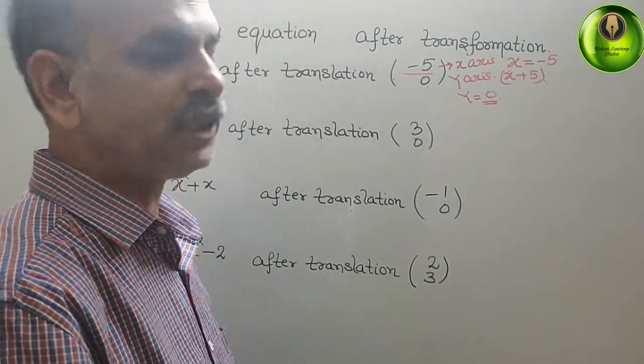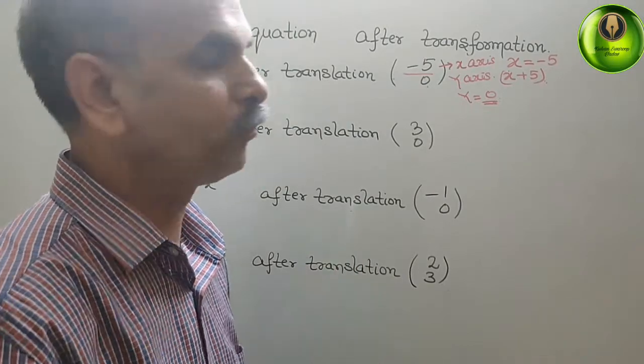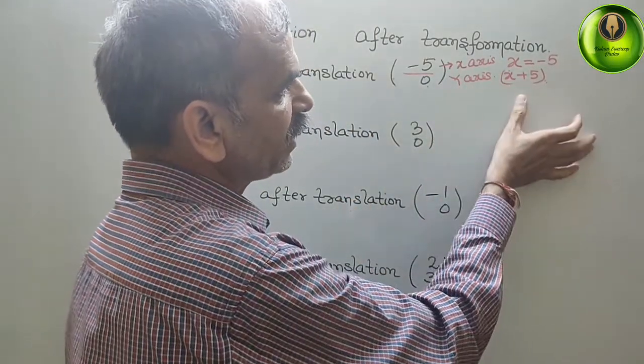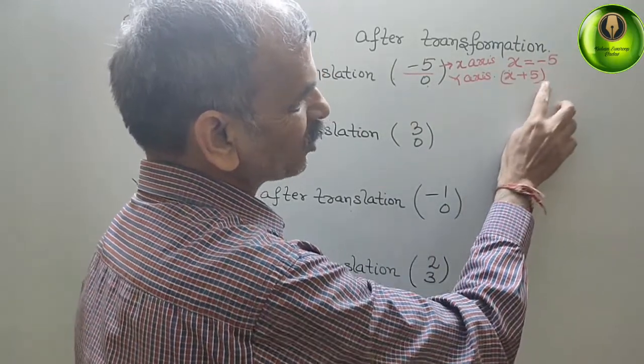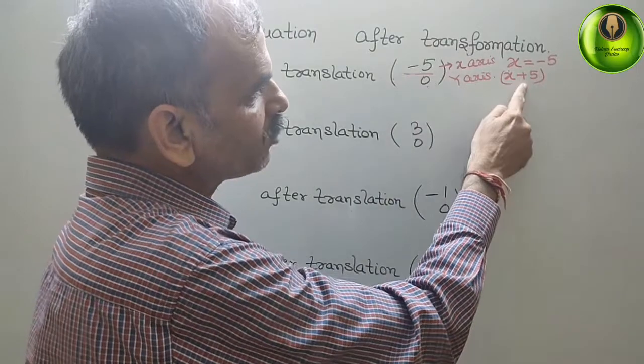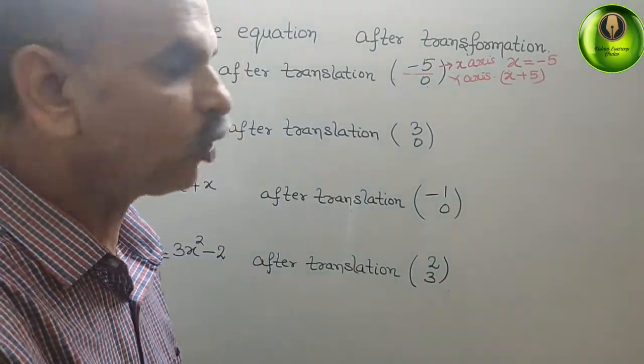Now, if you see here, what it will be? Just we have to keep in mind, don't see y. It will be just like this only. They have given minus 5. That means we have to add plus 5.